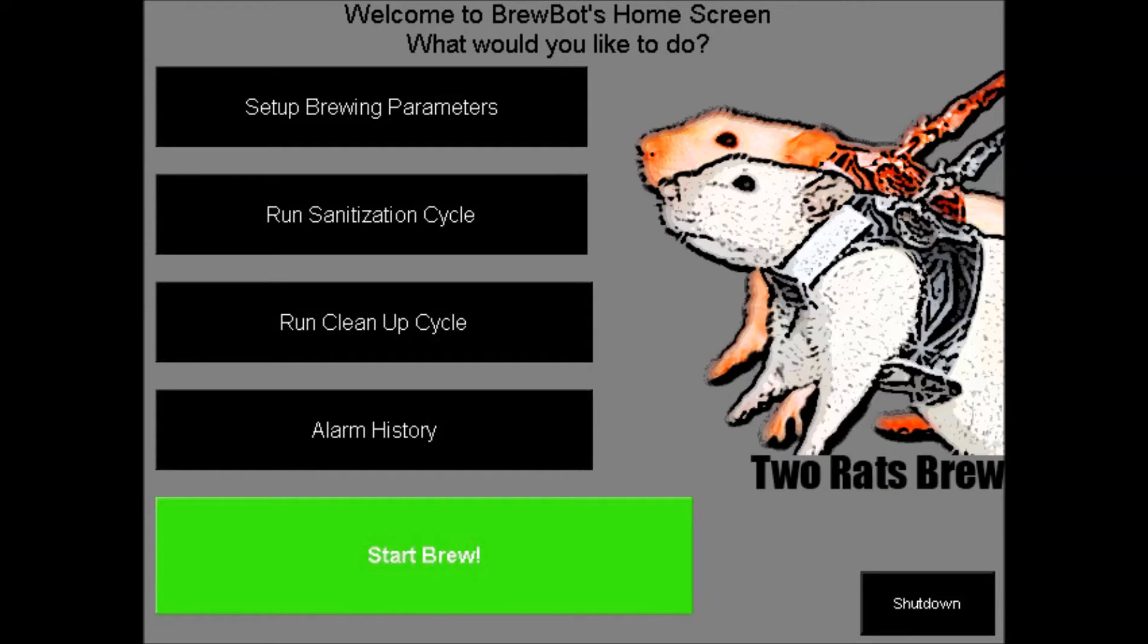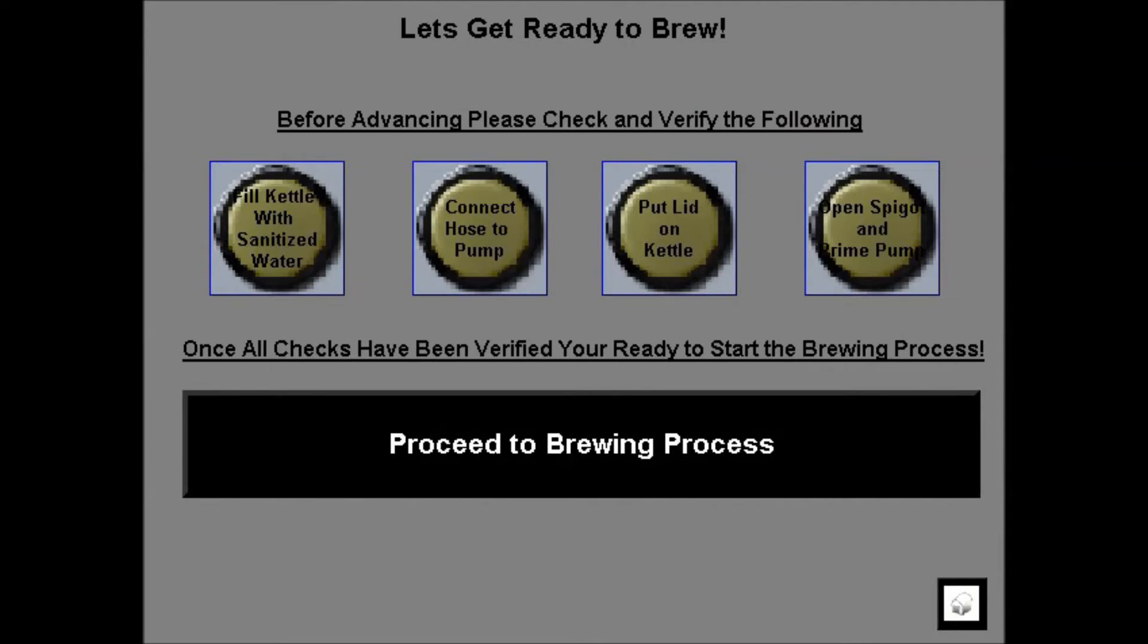Next, from the home screen, the user can select the start brew display. Here, the user is once again prompted to verify the physical parts are ready for the brewing process. Then, the user may proceed to the brewing process.